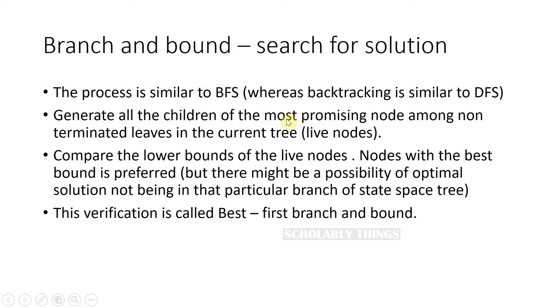These still-promising nodes are called live nodes. We can identify the nodes which are most promising by comparing the lower bounds of the live nodes. The node with the best bound is considered most promising, but there might also be a possibility of the optimal solution not being in that particular branch of state space tree. This variation is called best-first branch and bound.